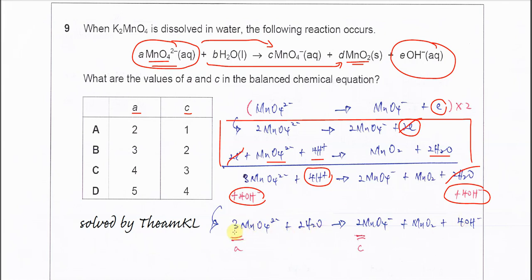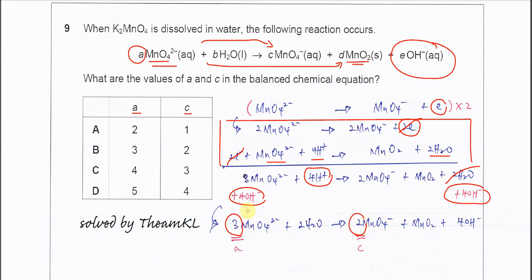The final equation is: 3 MnO₄²⁻ + 2 H₂O → 2 MnO₄⁻ + MnO₂ + 4 OH⁻. According to the equation, A is 3 and C is 2, so the answer is B. That's all for this question. Thank you.